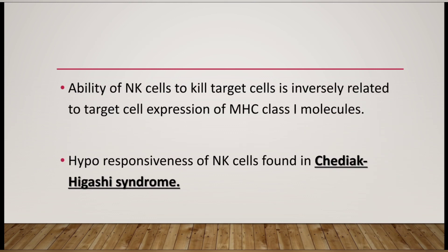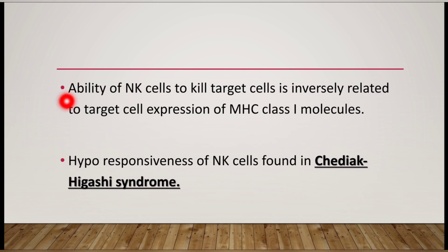The ability of natural killer cells to kill the target cell is inversely proportional to the target cell's expression of MHC class 1 molecule. If the target cell does not express MHC class 1, it will be killed by natural killer cells. Healthy cells express this MHC molecule and are therefore not killed, but a cell will be killed if its MHC class 1 expression is reduced.